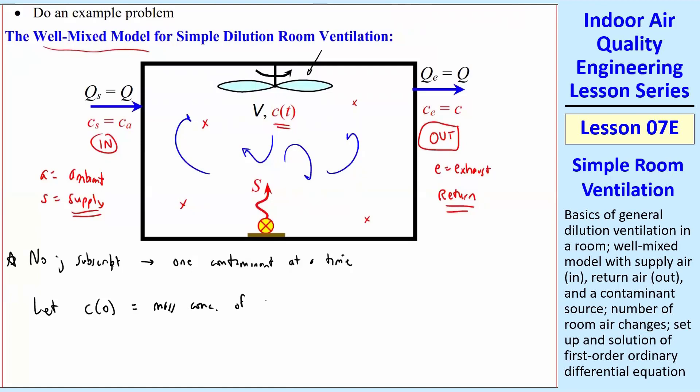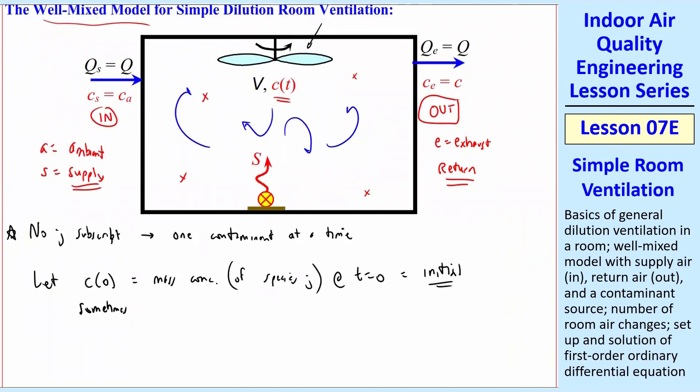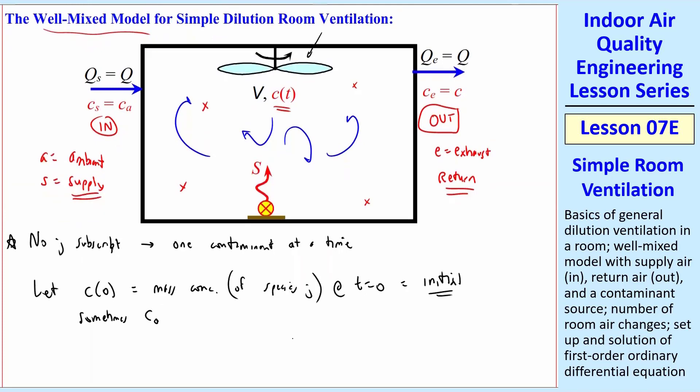We'll also let C of 0 equal the mass concentration of species J. We're removing the J subscript, so to keep that in mind. So the mass concentration at T equals 0 equal initial. And sometimes I'll write C naught here instead of C parentheses 0. If you look at this and you think back to a couple weeks ago, this should remind you of something.